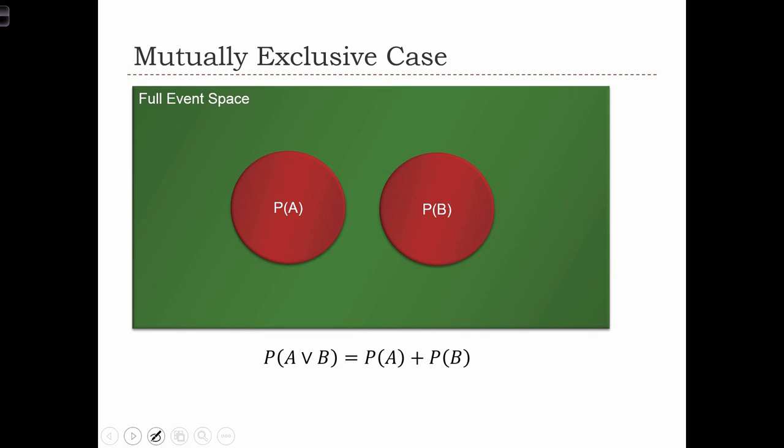We can also investigate this concept using Venn diagrams. Let the green area represent the full event space. So this green area contains all of the possible outcomes of an experiment.